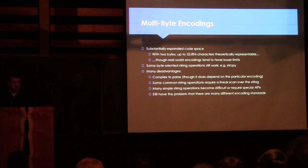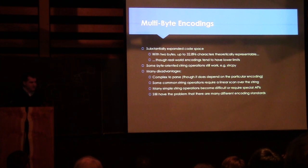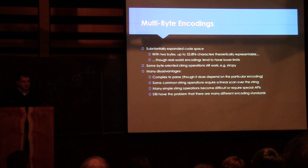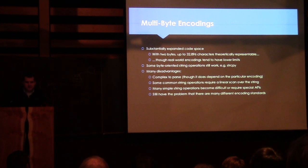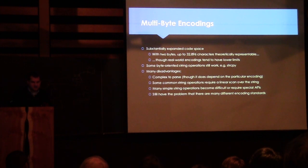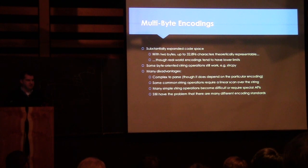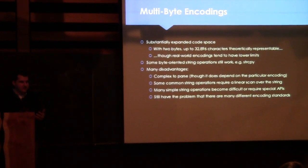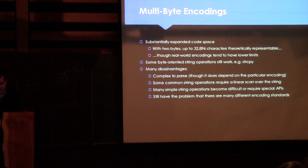On the bright side, there's a substantially expanded code space — you can represent up to around 32,000 characters, though generally fewer because of encoding design. Some byte-oriented string operations like strcpy still work to copy a full string. But there are many disadvantages: it's complex to parse, some common operations like finding the previous character require a linear scan, many string operations become difficult, and it doesn't map well to existing C APIs — for example, you can't call is-alpha because it takes a single char. We still have the problem of many different encoding standards, so you have to know the encoding of the text when you read it into your process.